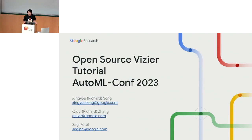Thank you for that introduction, and thank you for coming. Today I'll be talking about Open Source Vizier, one of the core hyperparameter tuning systems we have at Google. This is also partially a hands-on tutorial, so it would be nice if you wanted to get out your laptops to code along, but if not, that's totally fine as well.